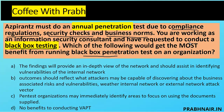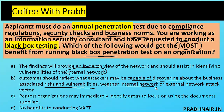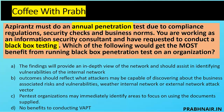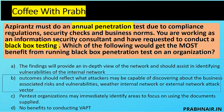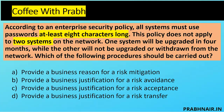Which of the following provides the most benefit from running black box testing? Option A says findings provide an in-depth view of the internal network and identify internal vulnerabilities — but why limit it to the internal network? Option B says the outcome should reflect what attackers may be capable of discovering about the business, its risks, and vulnerabilities — covering both internal and external attack vectors. Option C is about post-PT actions, not a benefit. Eliminating A because it focuses only on internal, the answer is B.